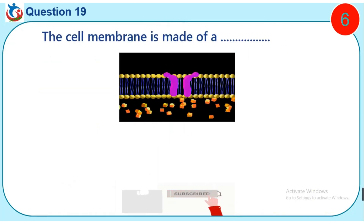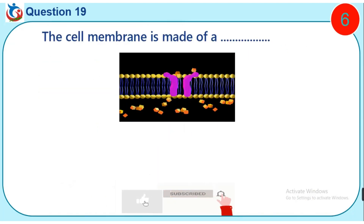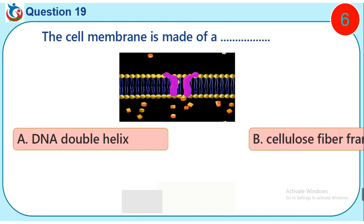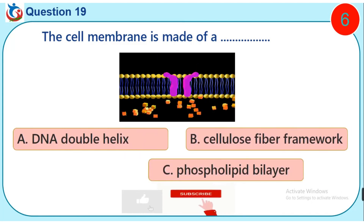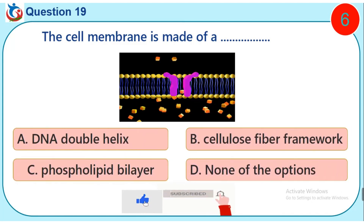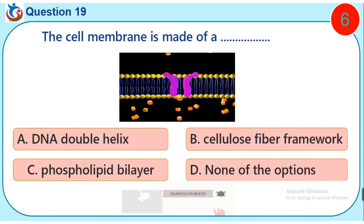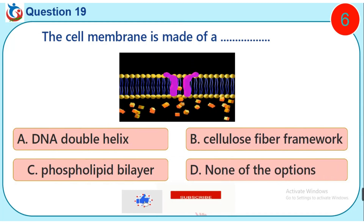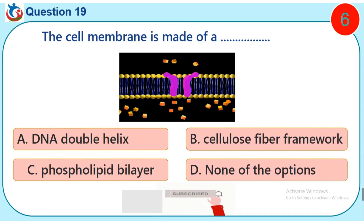Question 19. The cell membrane is made of a dash. A. DNA double helix. B. Cellulose fiber framework. C. Phospholipid bilayer. D. None of the options.